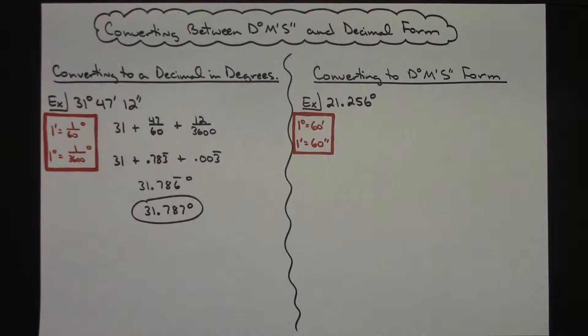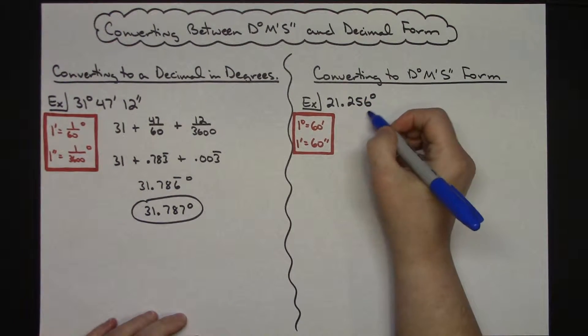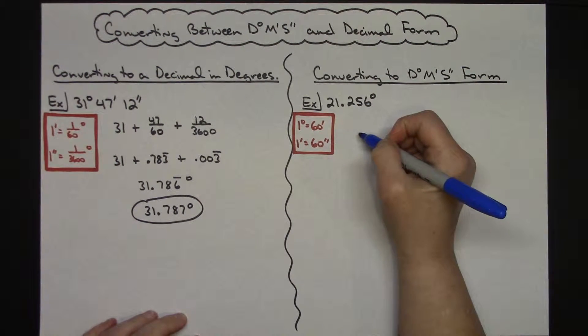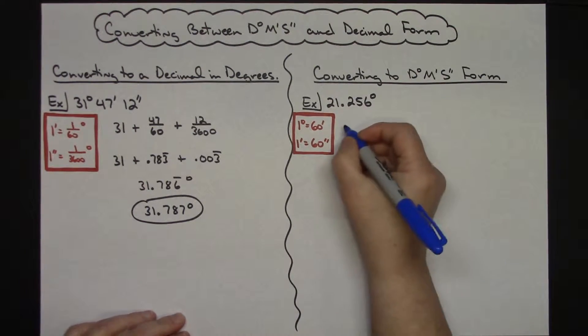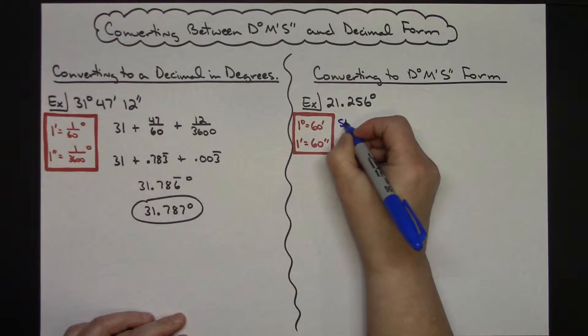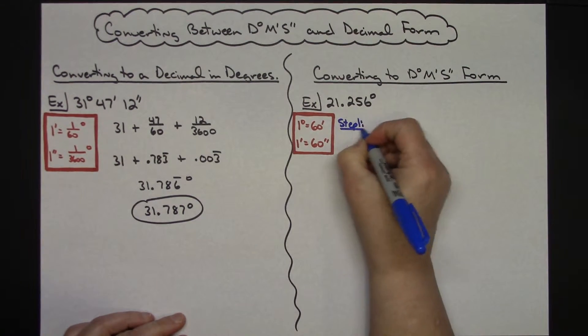Now generally for this I usually break it down into a two-step part because I want to take this fraction here, this 0.256, I want to convert it into minutes first and then whatever decimal I have after that then I want to convert that into seconds. So let's break this up into a step one, step two.